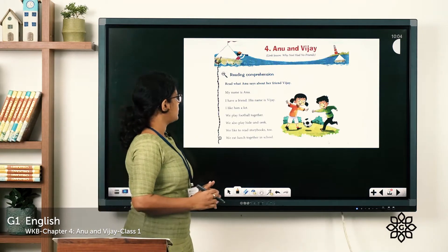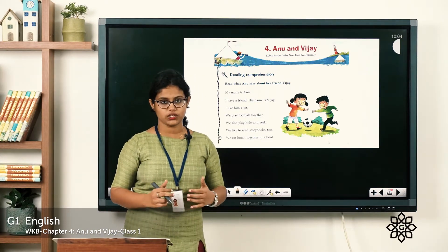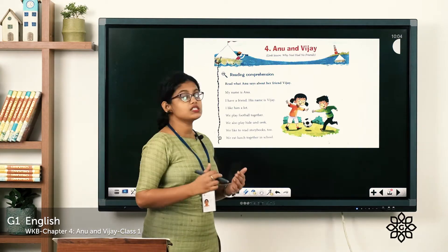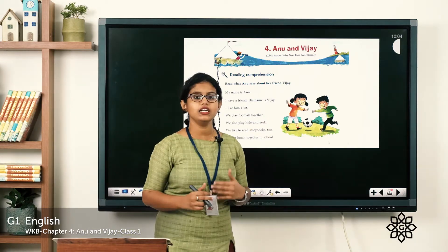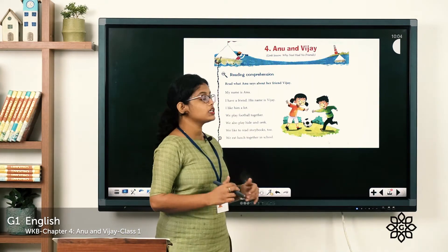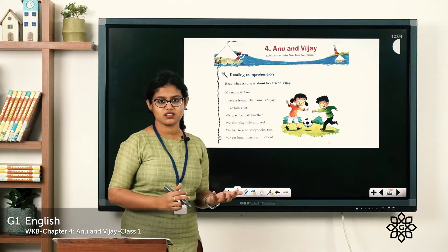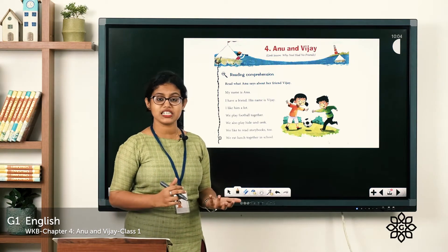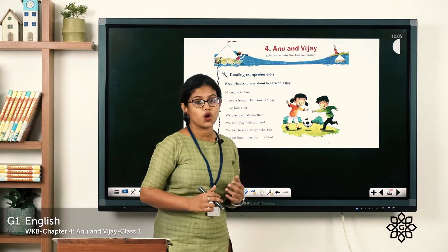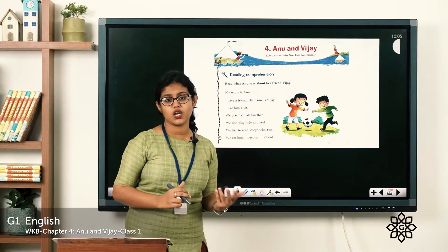Read what Anu says about her friend Vijay. Let's read it. 'My name is Anu.' So this is a little girl named Anu. 'I have a friend, his name is Vijay.' She is talking about her friend — his name is Vijay. 'I like him a lot' — and she likes her friend a lot.